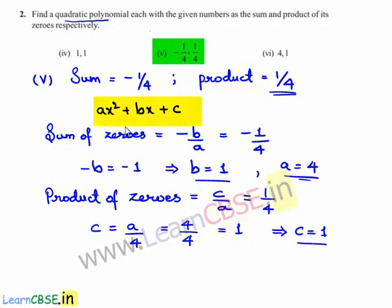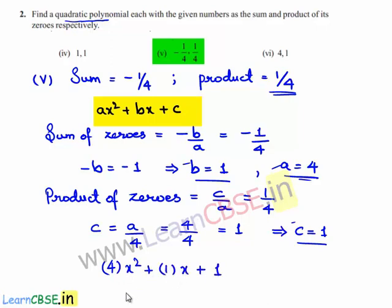Substituting the values of a, b, and c in ax² + bx + c, we get 4x² + x + 1. Hence, the required quadratic polynomial is 4x² + x + 1.